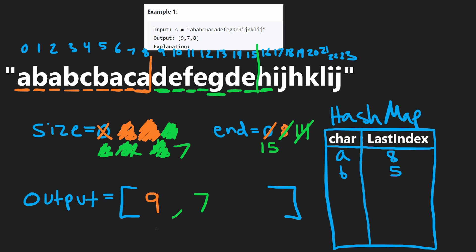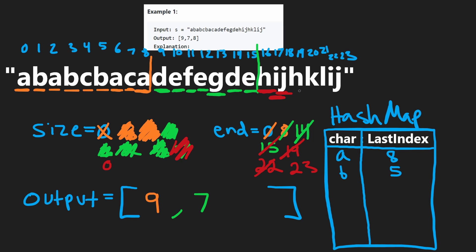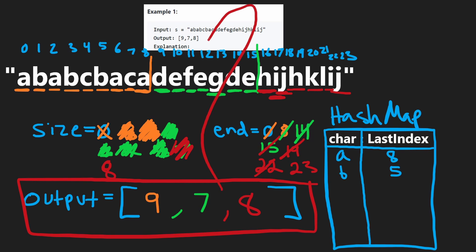Next we go to the third partition. The first character is H — our size has been reset to zero. Last occurrence of H is at index 19, so that's our new end. The second character is I — last occurrence is at index 22, so we update end to 22. Third character is J — last occurrence is at index 23, which is the end of the string. We continue running through the algorithm, visiting all remaining characters without updating end further. The size of this partition is eight, which we add to our output.